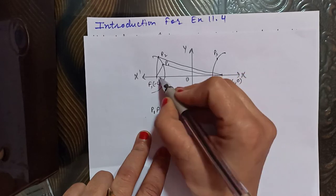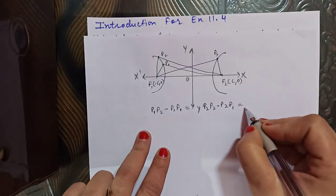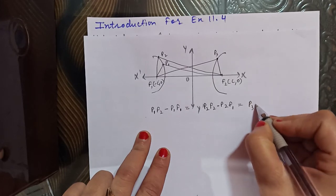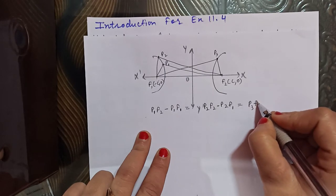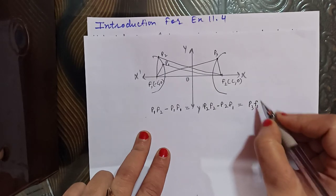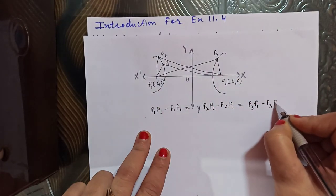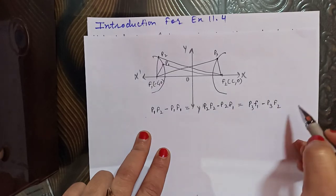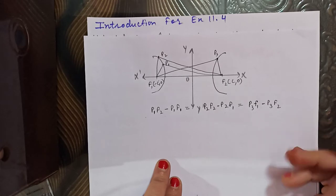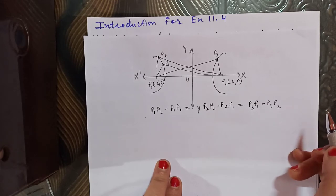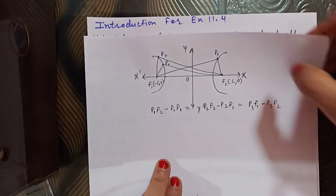Now take point P3 — join it with F1 and F2. We get P3F1 minus P3F2 (since this is the long distance). For all three points, the result will be a constant number. This is how the shape of hyperbola is formed.